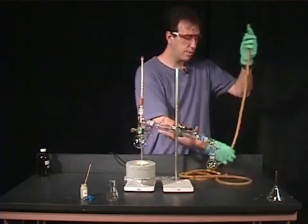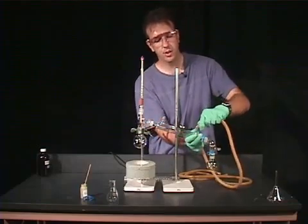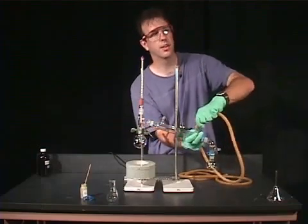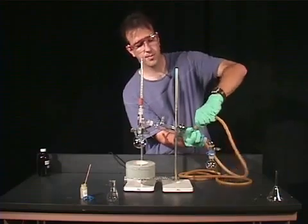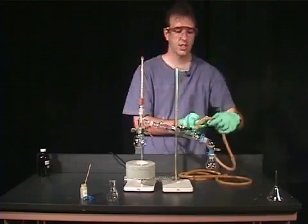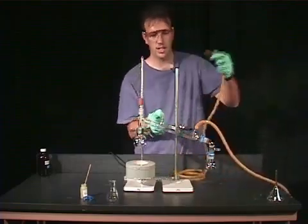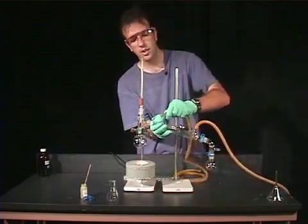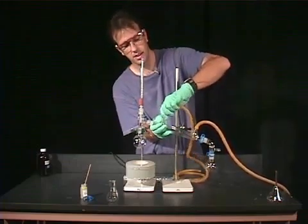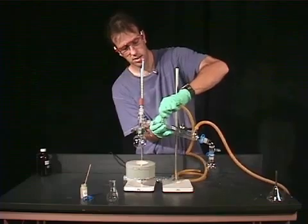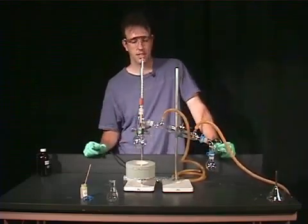Now we want to add the rubber tubing which will be available in your hood. The water goes in at the bottom. You can always get the tubing just a little bit wet and it will help it slide onto the water jacketed condenser. And the tubing that goes to the drain comes out the top.